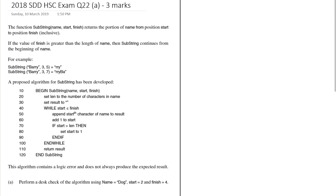A proposed algorithm for substring has been developed. It begins by setting len to the number of characters in name and result to an empty string. Then, while start is less than or equal to finish, it appends the start-th character of name to result, adds one to start, and if start is greater than len, sets start back to one. Finally it returns result.